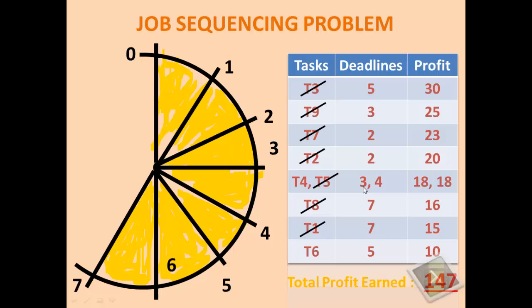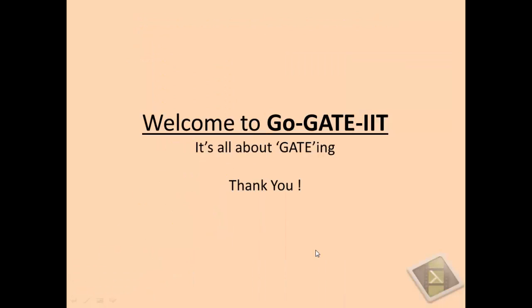Ultimately we can say that we are left with only 2 tasks T4 and T6 as unexecuted with a maximum profit earned 147. That is all. Subscribe to GoGetIt for more videos. Thank you.